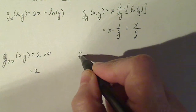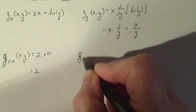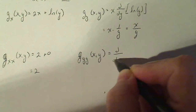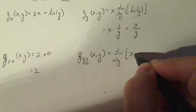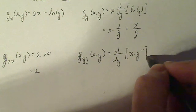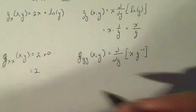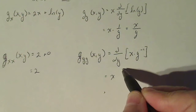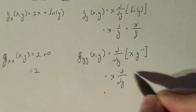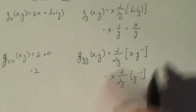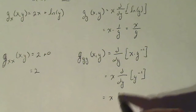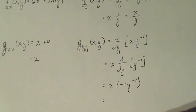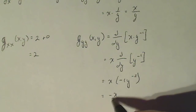Now g sub yy of xy means I'm taking the partial with respect to y of x times y to the minus 1, which is what x over y is. Since x is a constant, I take the partial with respect to y of y to the minus 1. Using the power rule, that's minus 1 times y to the minus 2, which simplifies to minus x over y squared.